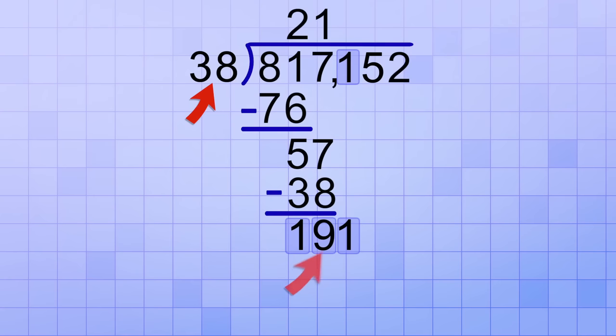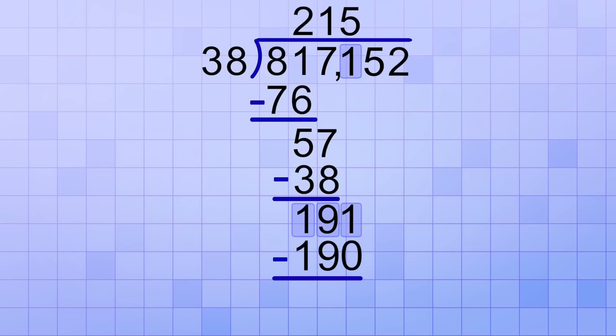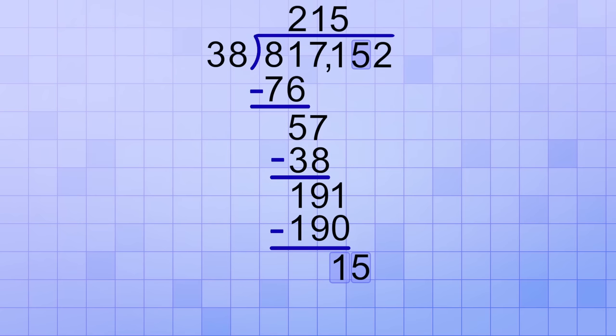On to the next digit. We bring down a copy of the 1 and now we ask, how many 38's will it take to make 191? That's a bit tougher. To estimate, I'll round those numbers to 40 and 200. And I know that 5 40's makes 200, so 5 is my estimate for the next answer digit. 5 times 38 equals 190. And 191 minus 190 leaves a remainder of 1.